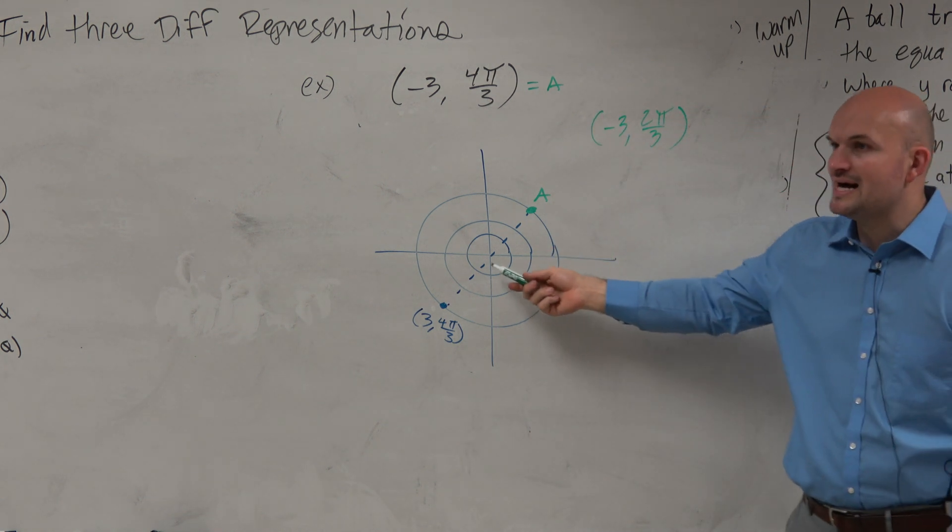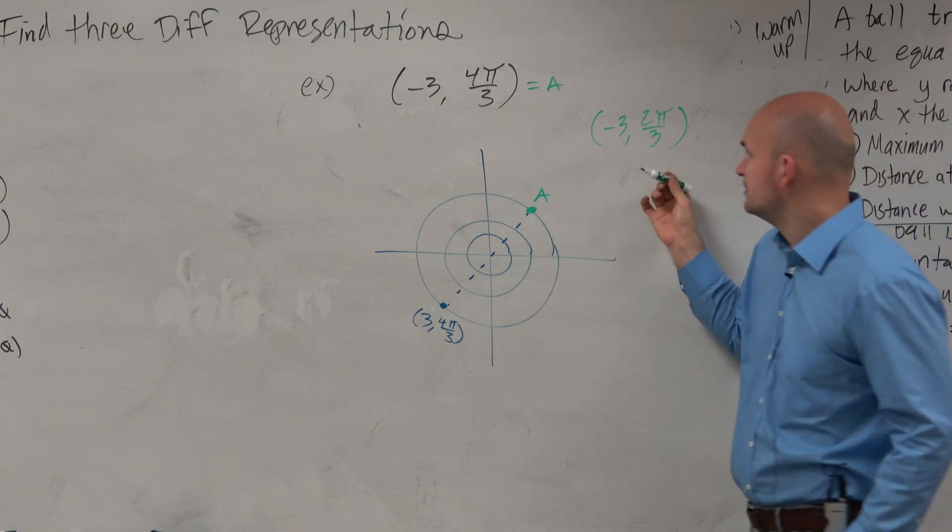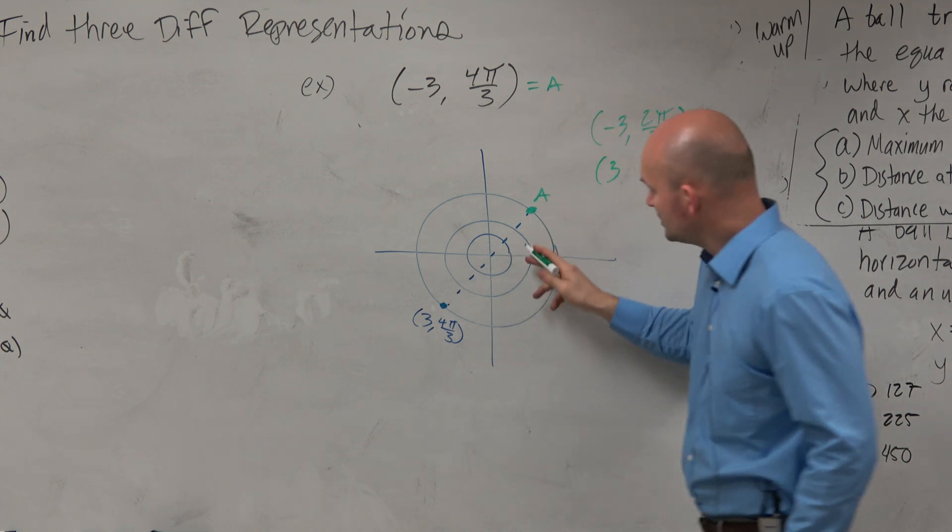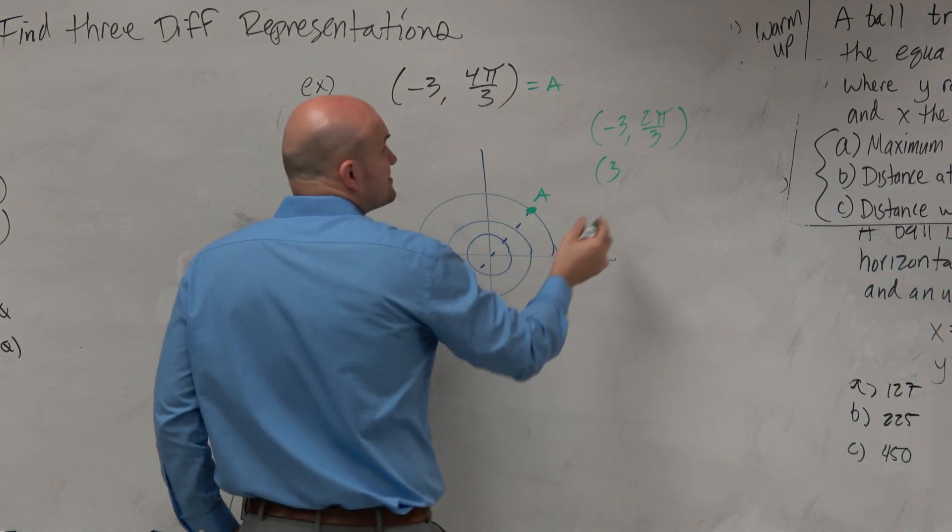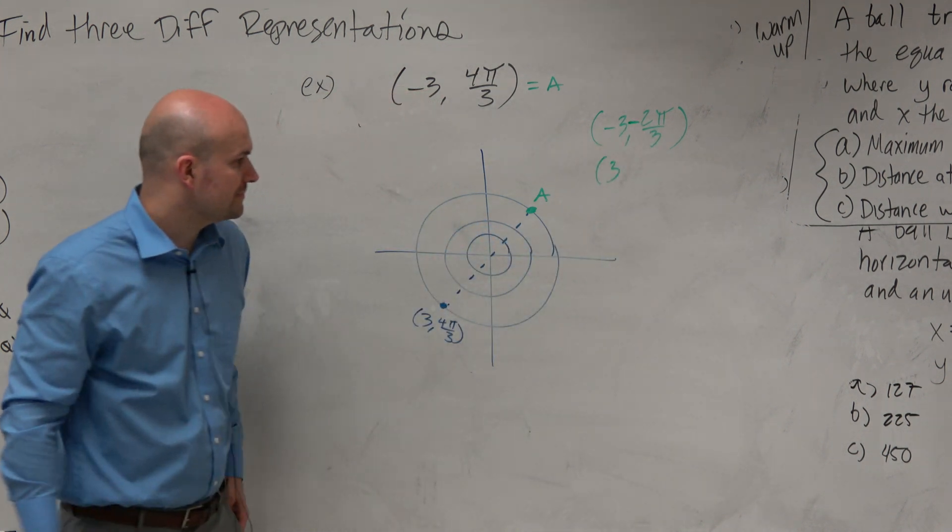What about if we just want to use the positive 3? Well here's where the angle is. What is this? Wait, we're not going to do negative 2. Oh I'm sorry, yeah, good, thank you. Negative 2π over 3, thank you.